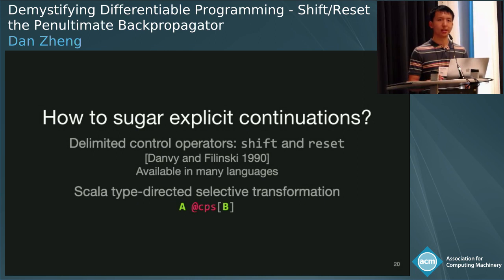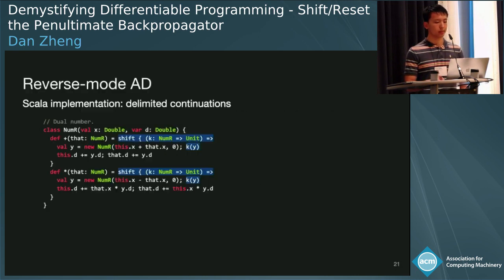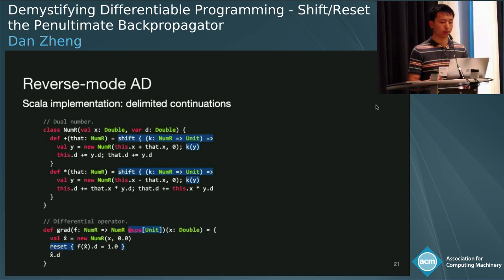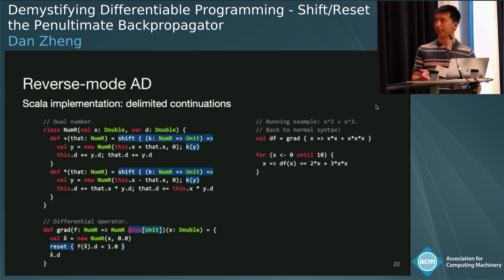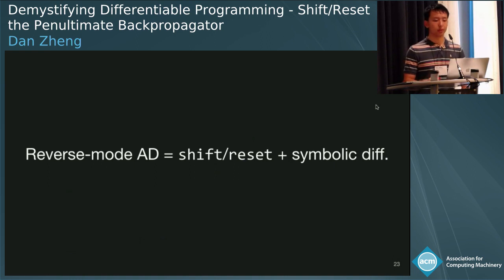Here's what a different implementation looks like using delimited continuations. The operators now use shift, which provides the continuation, and the differential operator uses this type annotation and sets the derivative of the output to one within a reset block. This allows us to get back to normal syntax — we solved the usability problem. That's one of the main themes of the paper: reverse mode AD is really shift and reset along with symbolic differentiation rules.